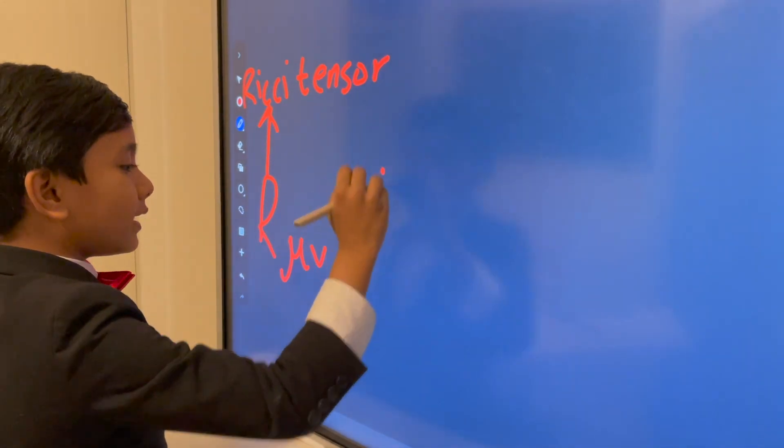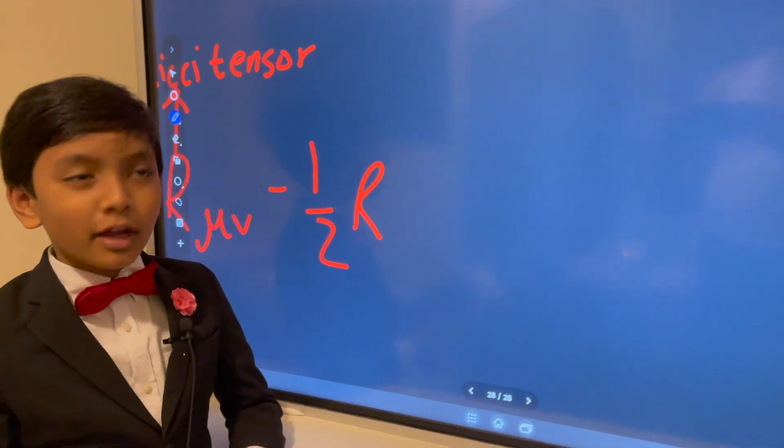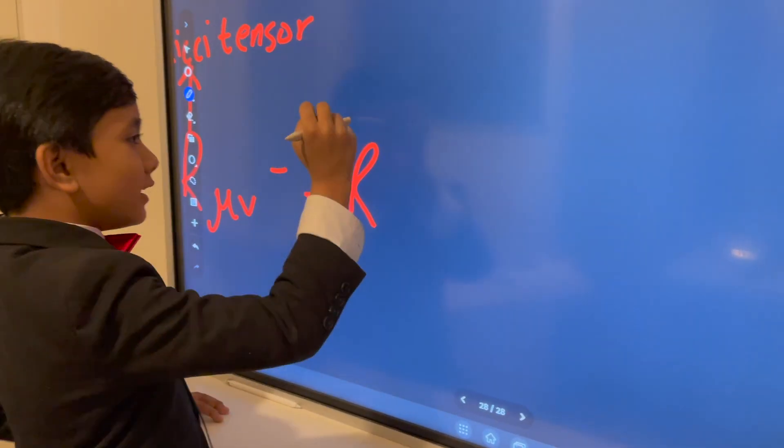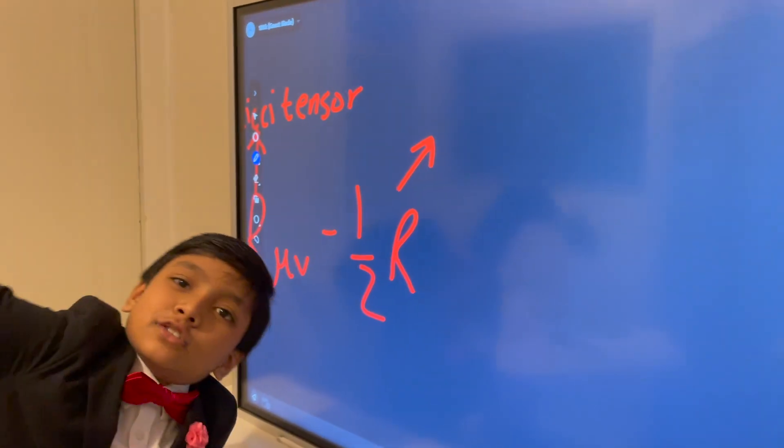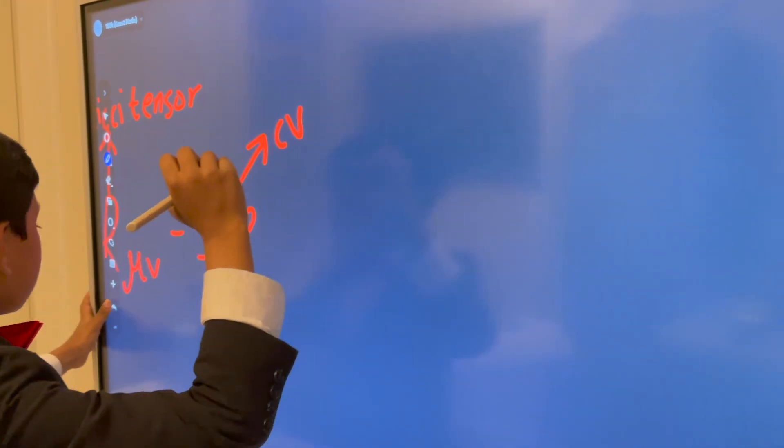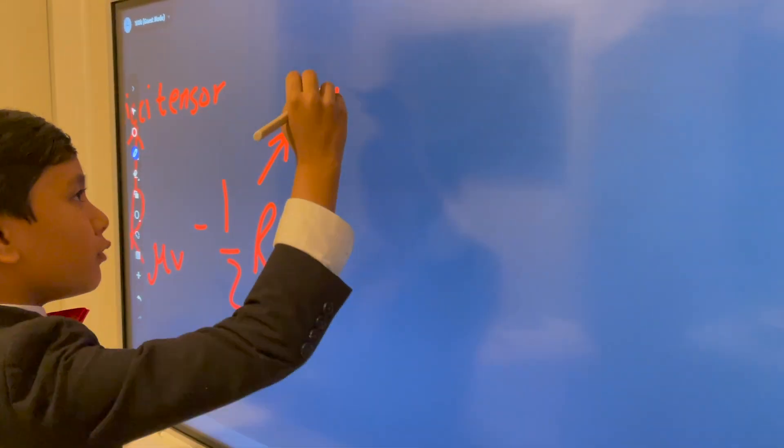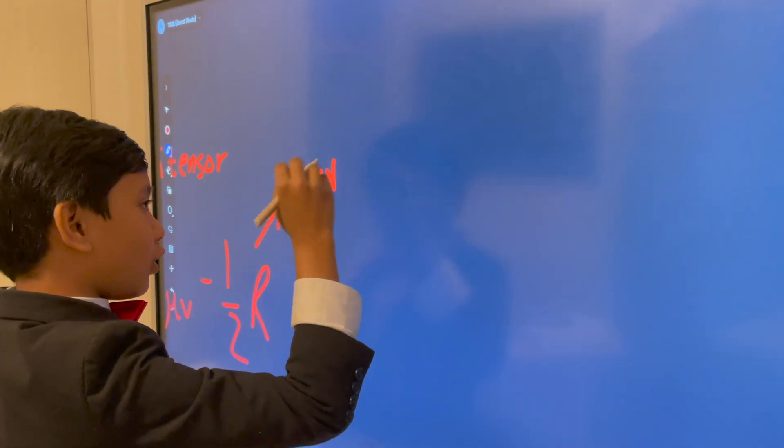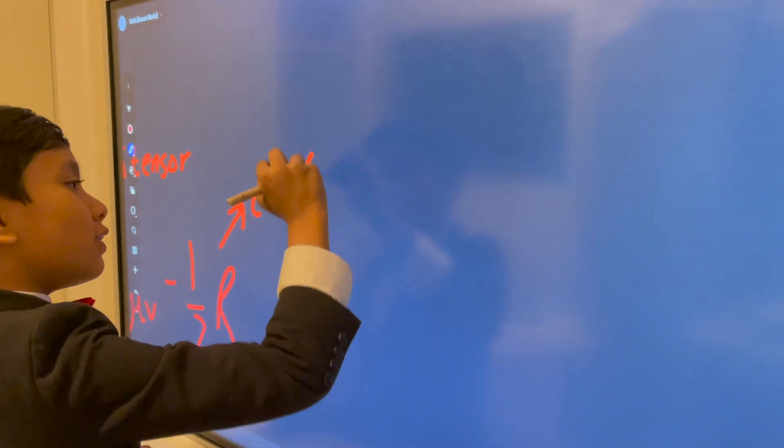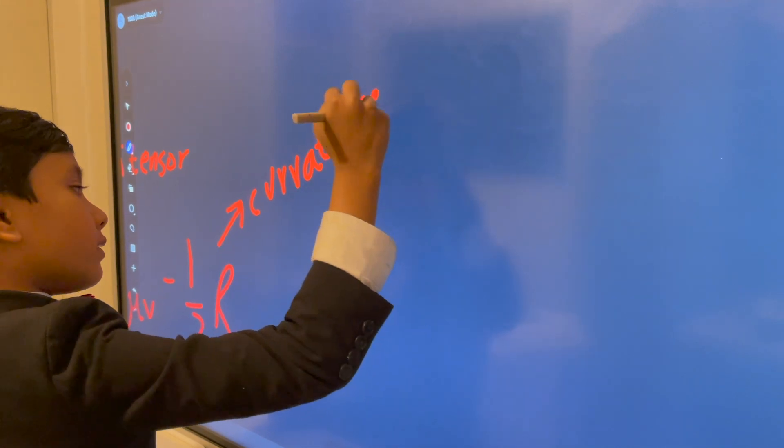And then you have minus one half. Now, you may be wondering, what is R? Well, it's the curvature scalar. Why am I writing R or U's as V's? I'm not Greek. Curvature scalar.